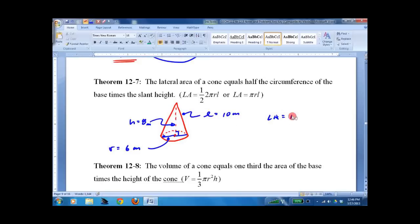So lateral area equals π times 6 meters times 10 meters. Lateral area equals 60π.